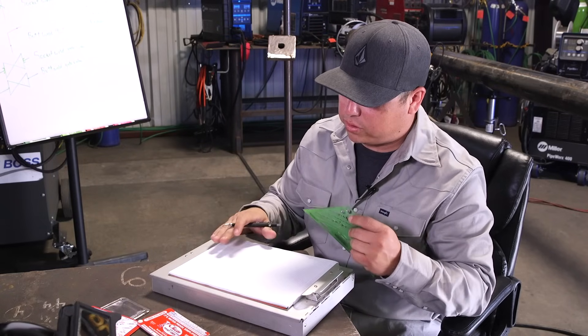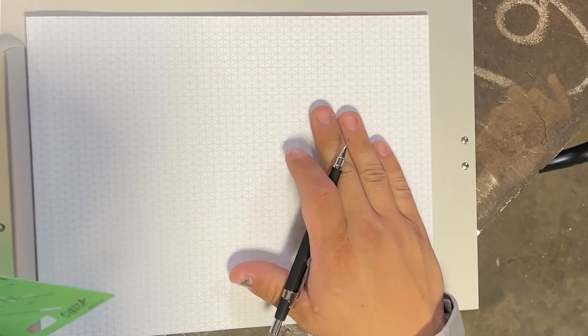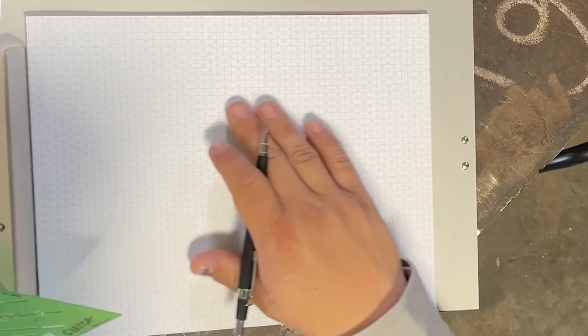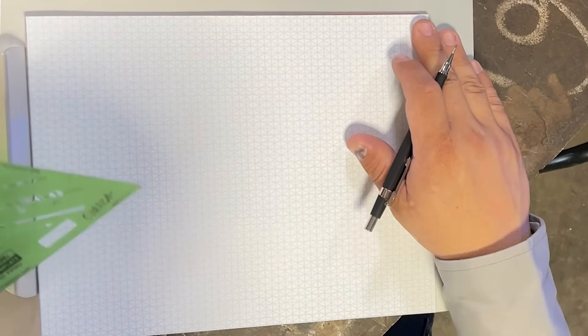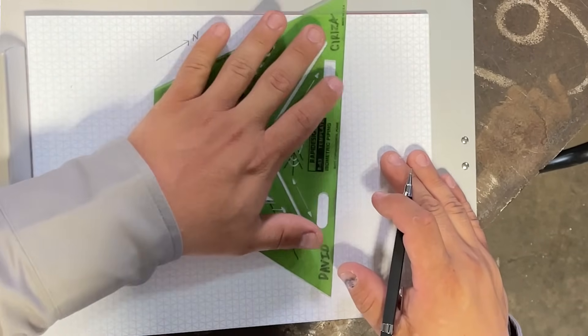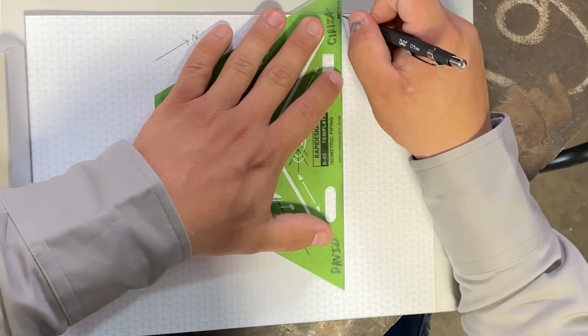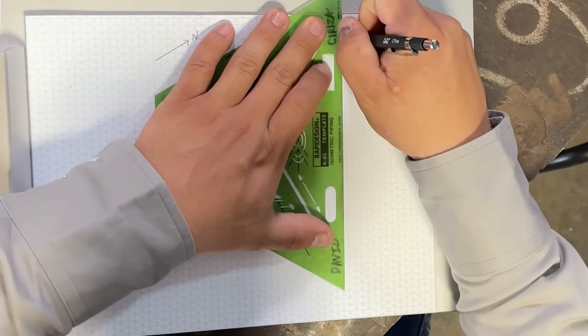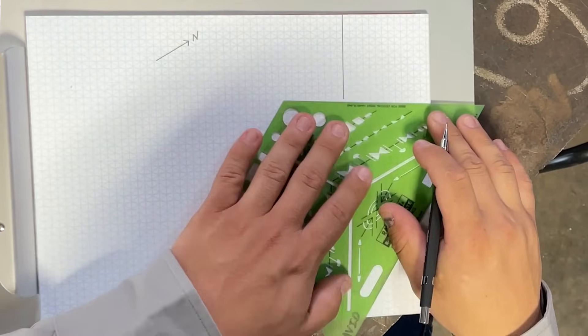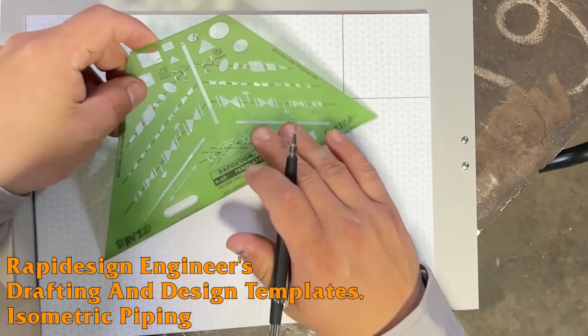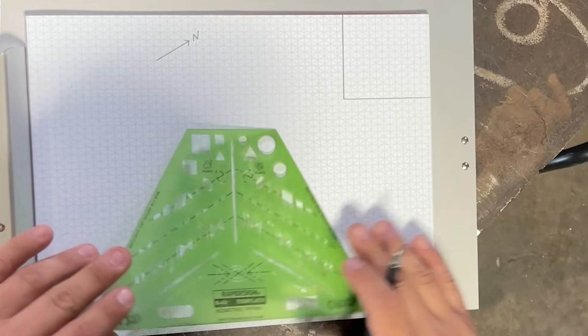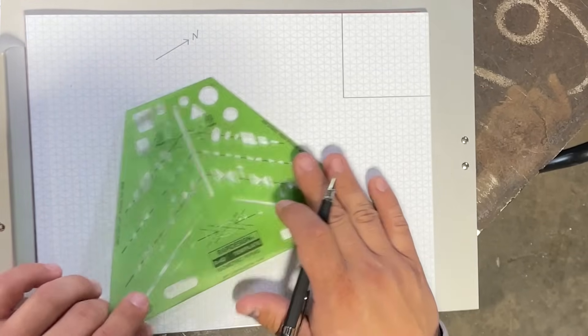Okay guys, so first thing here, I have the isometric paper in front of me, and we are going to decide which way we are going to draw north here. I'm going to go ahead and point it up to this right-hand corner. So that'll be north for us here. And then I like to, on this upper right-hand corner, make a box for our bill of material here. Guys, I'm using this rapid design template for isometrics here. Just helps keep everything cleaner and nicer. Not necessary, but it does help.